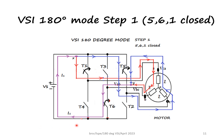Let us see the step one operation of the 180-degree mode. In step one, switches 5, 6, and 1 are closed. When the supply is given, current flows through these switches. The first path: current flows from the source through T1, goes through point A through the load to point B, and comes back through switch T6 to the source. This is the current path followed by switches 1 and 6.